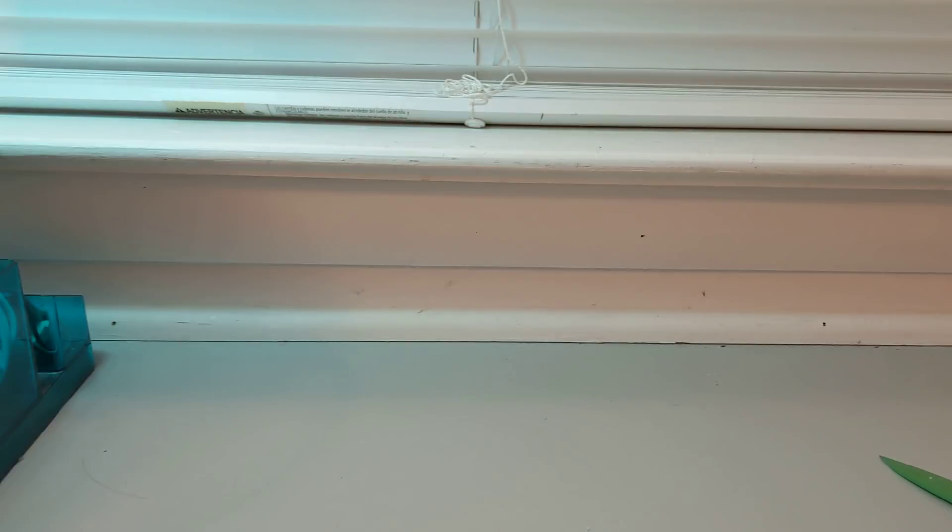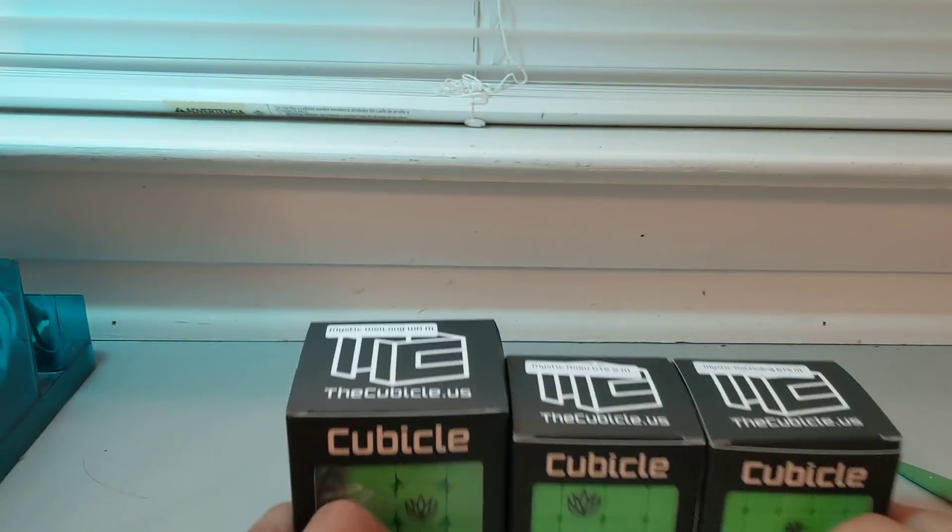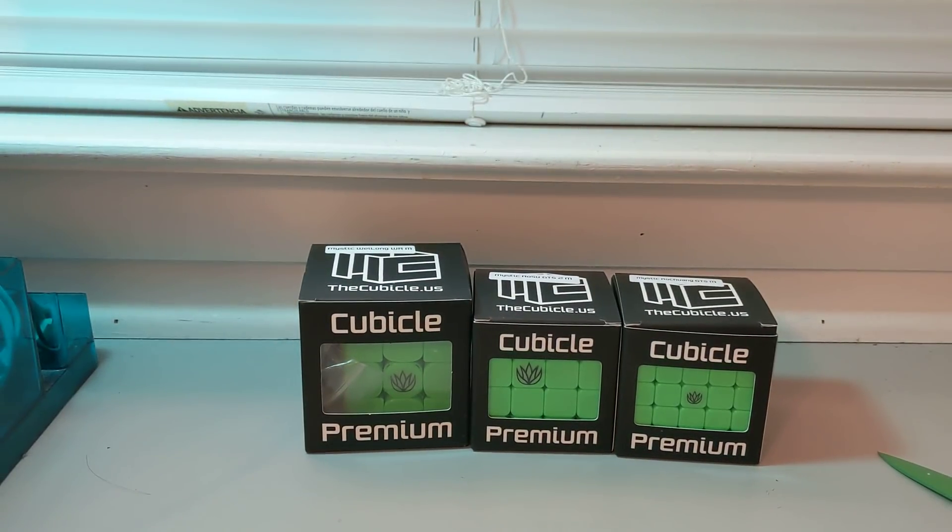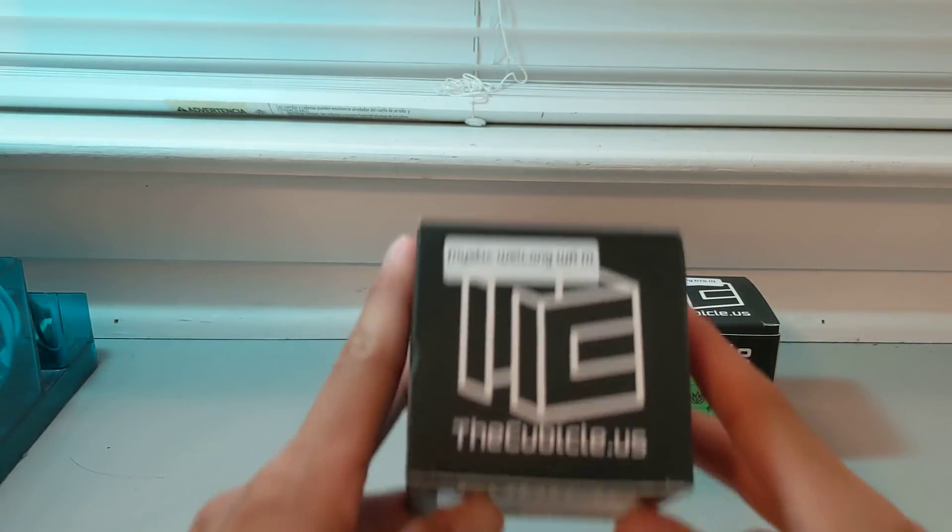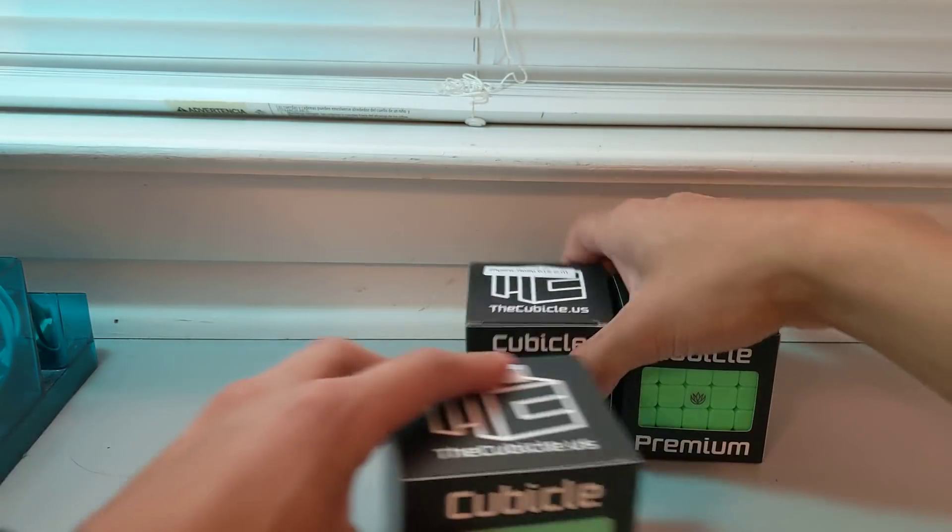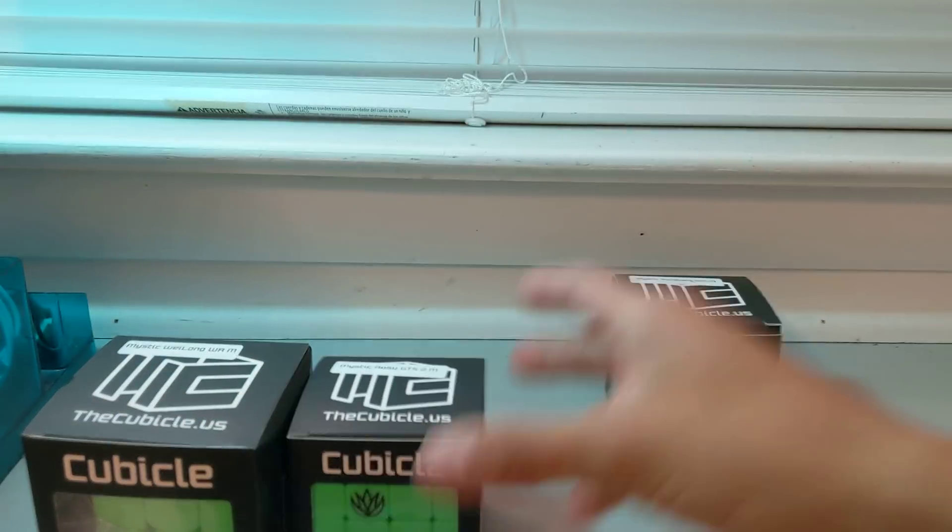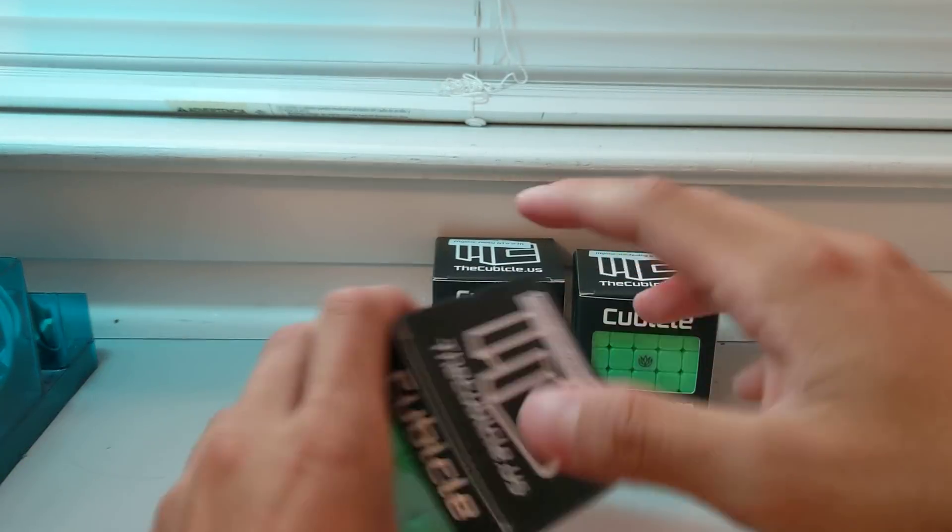All the cubes are out. The order that I have is three puzzles, and if you have looked at the title of this video at all, you'll know exactly what these puzzles are, but we'll go into them one by one. I have a Mystic Weilung Worm, Mystic Aosu GTS2M, and Mystic Aochuang GTSM. Put these to the side.